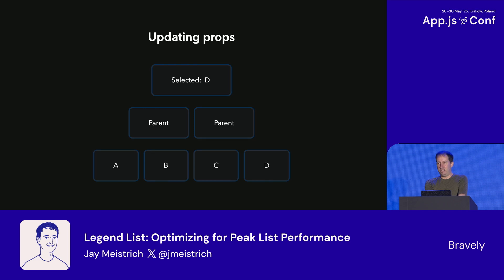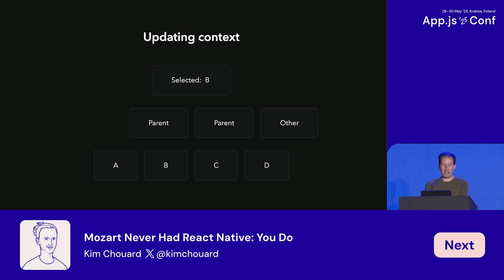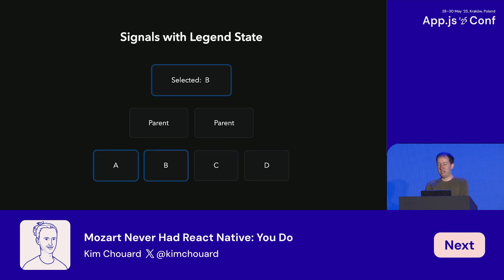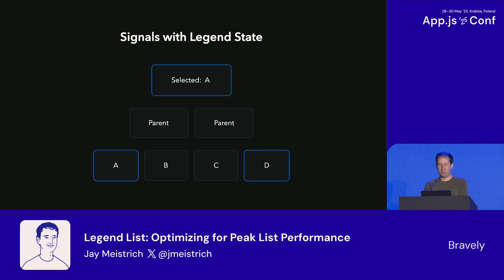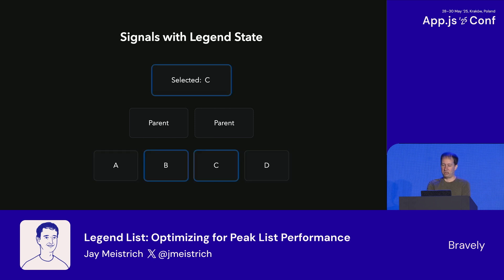My React performance journey started with optimizing state, because state is what triggers renders. Everybody says lift the state up, but then you pass it all the way down a tree, which is a big performance problem because it re-renders the whole tree every time something changes at the top. Context can be better, but it can also be worse, since every consumer of a context re-renders when it changes, even if it doesn't really need to. So I built Legend State to make renders as rare and small as possible — it's basically a signaling system where each component subscribes specifically to only what it cares about and re-renders itself when that changes, so re-renders are focused small and only where needed.